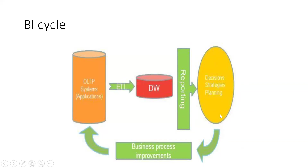They change the strategy, which can be reflected in the next day's OLTP system. It's a closed loop. For example, in the form of charts and graphs, the business can check that a particular outlet is having below-average performance compared to other outlets.